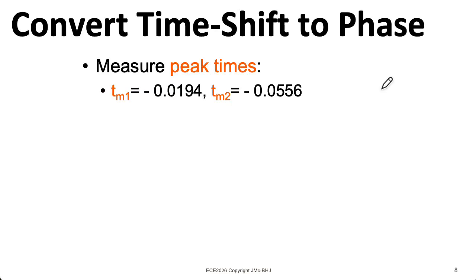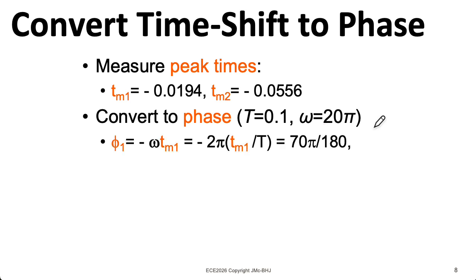So for x₁, we have a peak at minus 0.0194. And for the second sinusoid, we have a peak at minus 0.0556. So we need to convert these to phases. The frequency of our wave in radians per second is going to be 2π divided by the period. That's 20π radians per second. And we can use the formula of φ equals minus ω multiplied by the time of the peak. Now, if you were to take this and this and plug it into your calculator, it's not obvious that you get this initially.